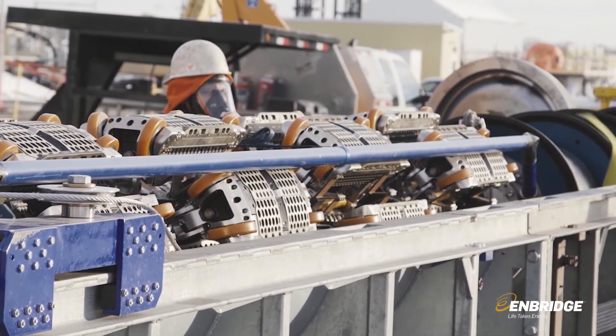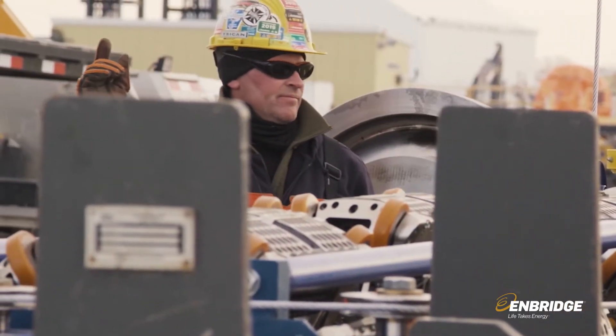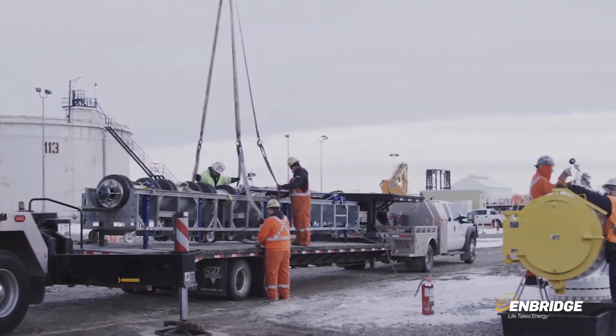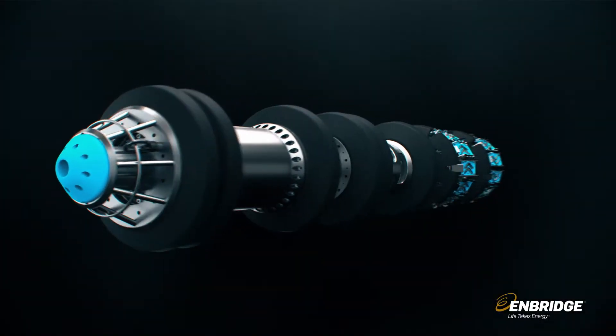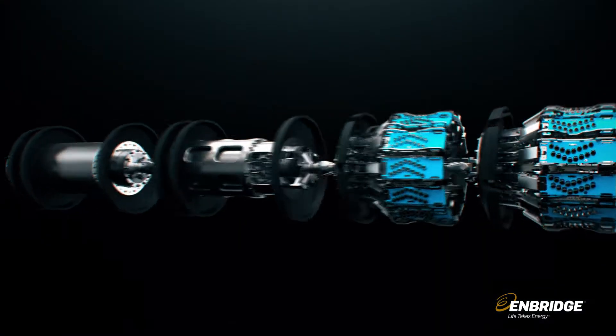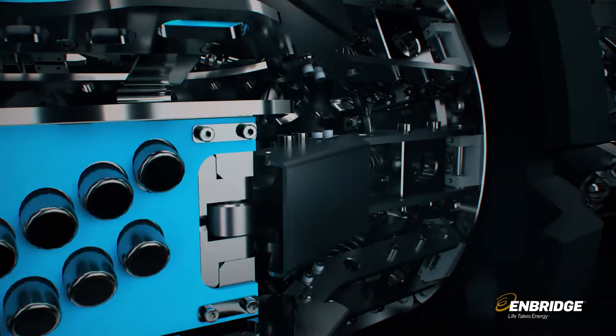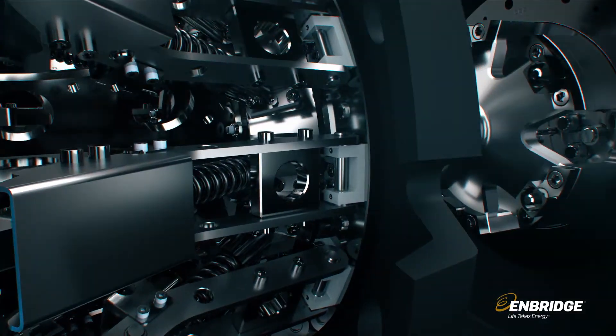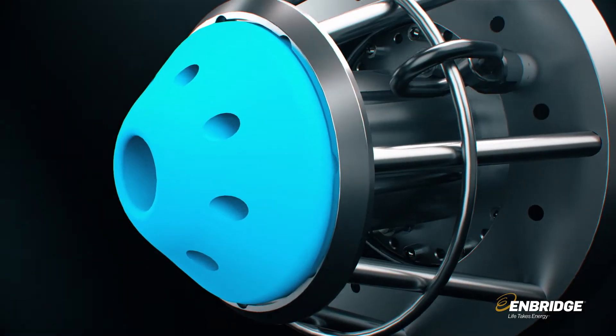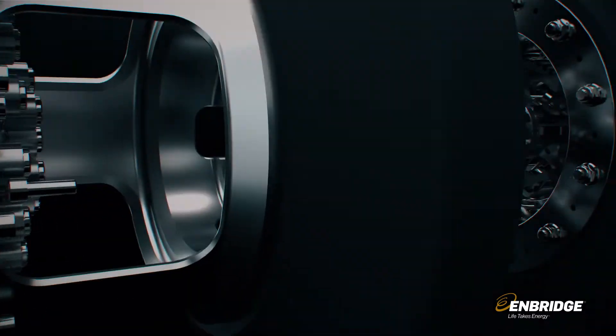Inline inspection tools act as the eyes and ears of our proactive pipeline safety program. ILI tools, as they are known, are highly complex pieces of equipment that move through our pipes and use advanced sensor technology to inspect pipe walls millimeter by millimeter.